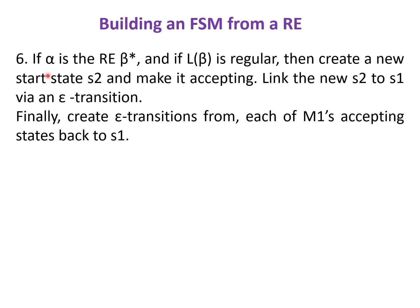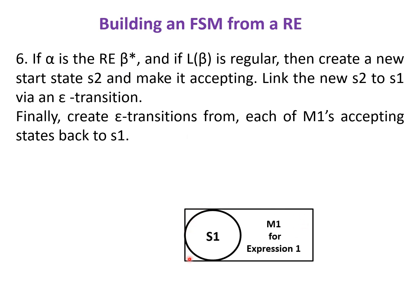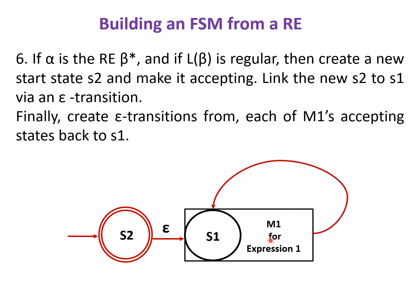If alpha is the regular expression beta star and L(beta) is regular, then to construct the FSM for the Kleene star operation beta star: given FSM M1 with start state S1, create a new start state S2 and make it an accepting state, link S2 to S1 via an epsilon transition, and finally create an epsilon transition from each accepting state of M1 back to S1.